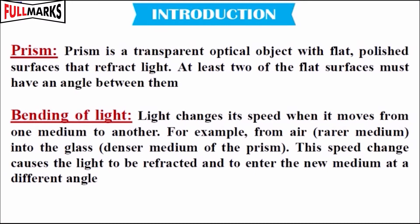Bending of light: Light changes its speed when it moves from one medium to another. For example, from air into the glass, this speed change causes the light to be refracted and to enter the new medium at a different angle.